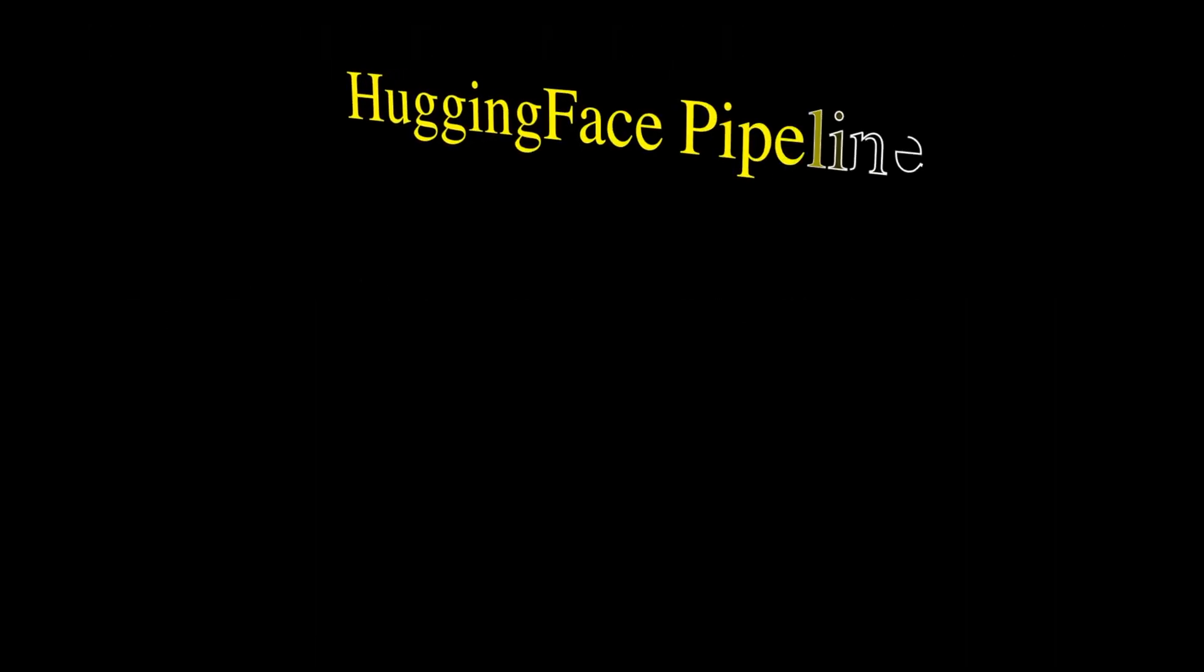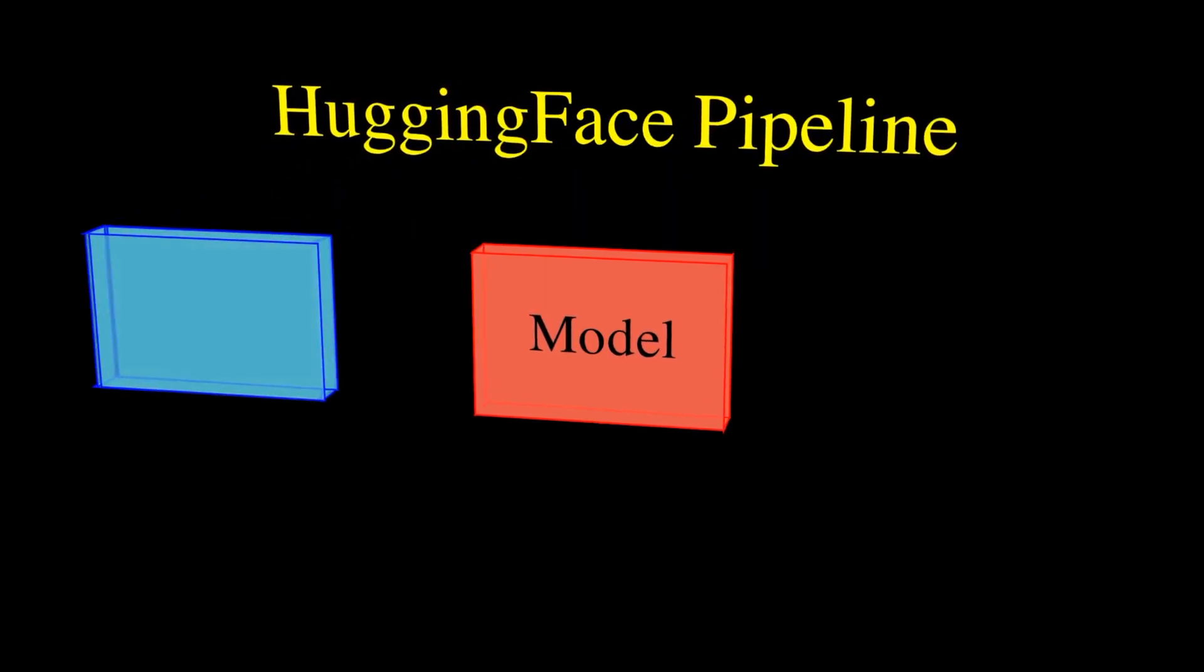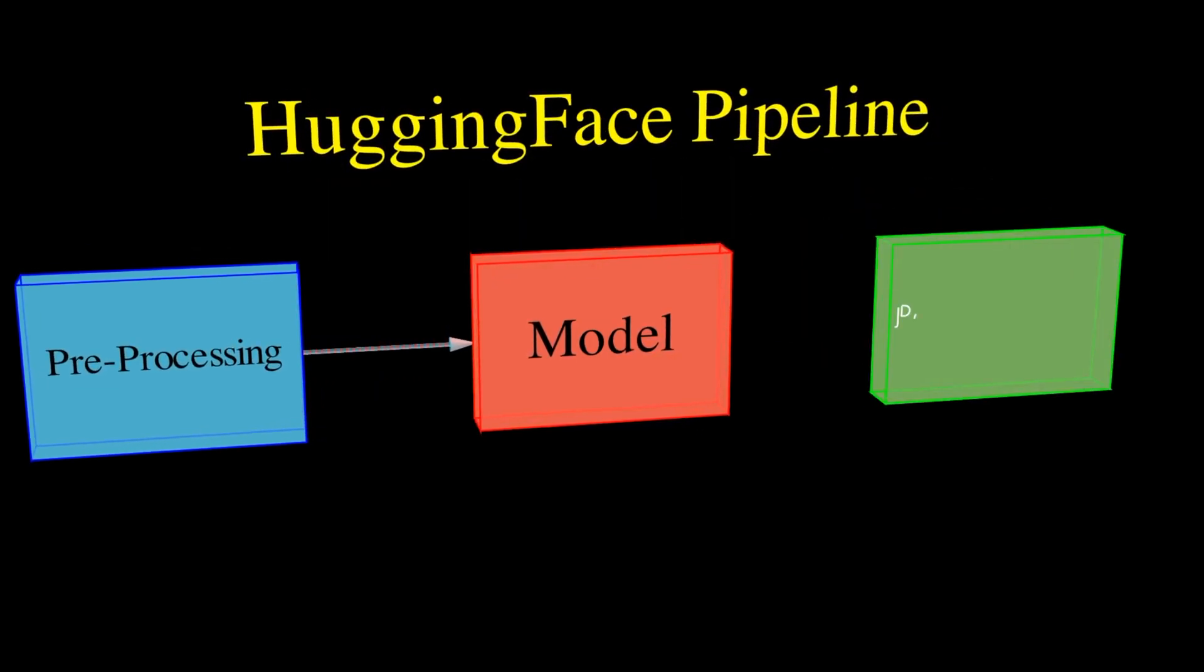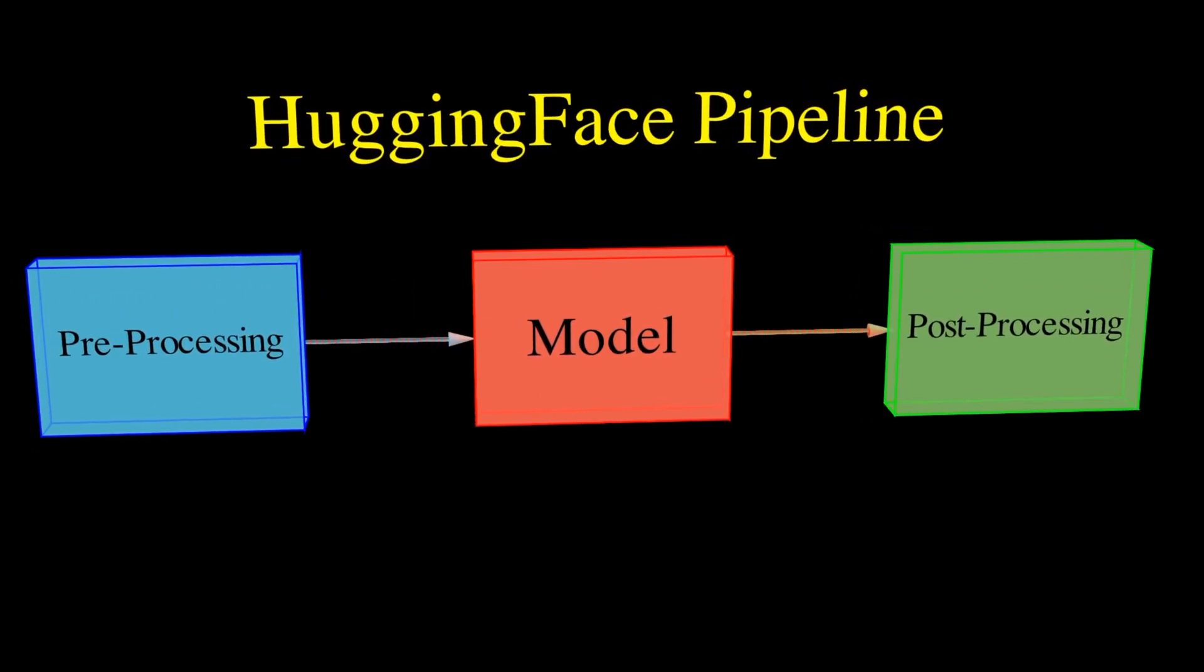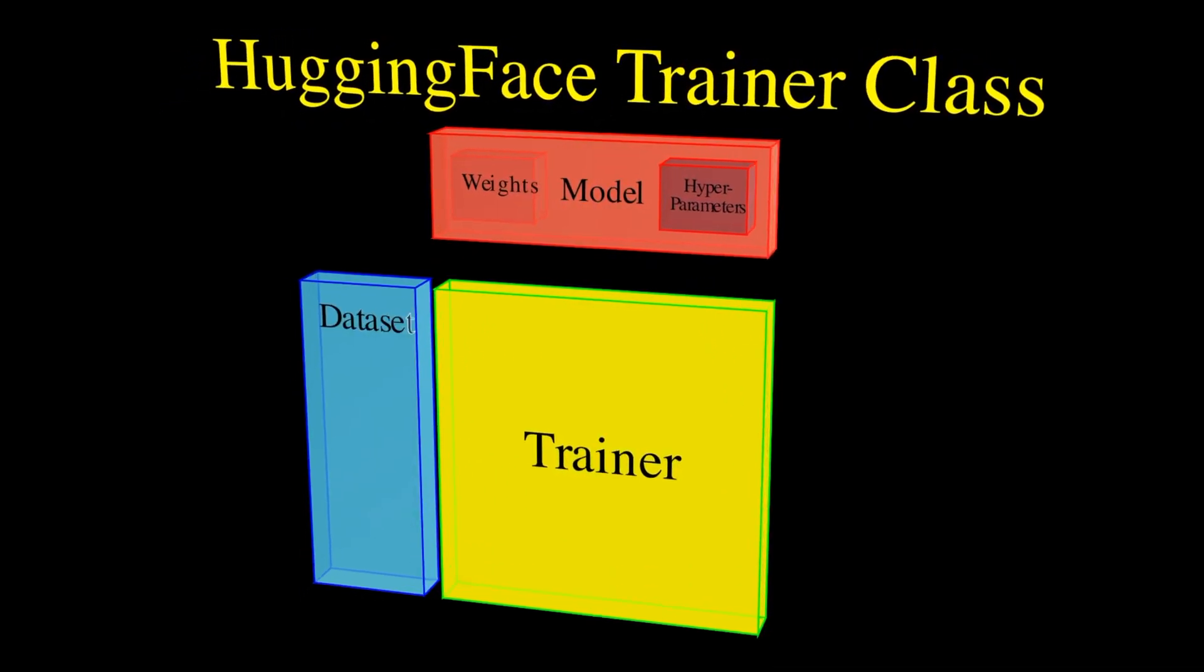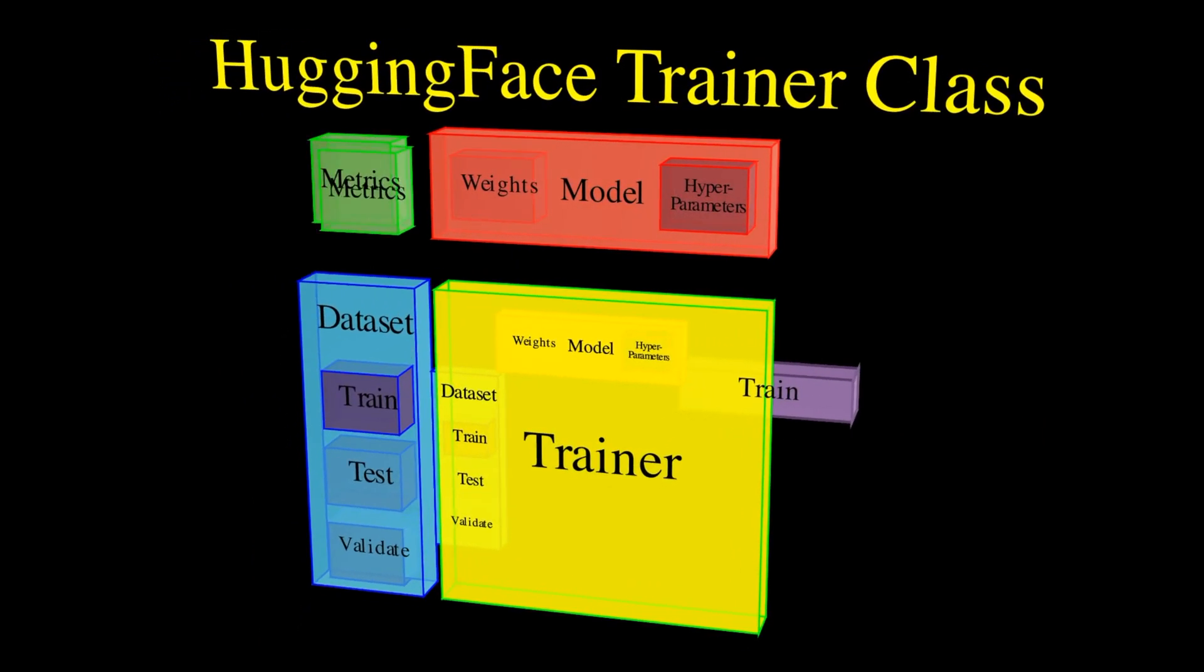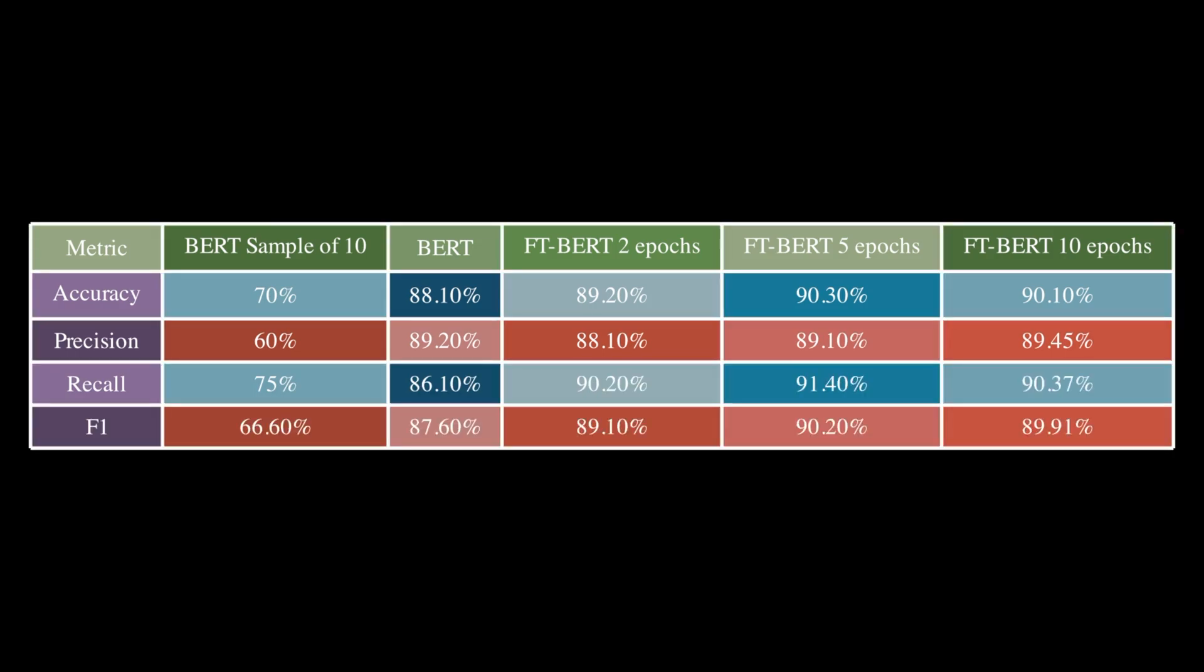So let's recap what we've covered in this video. We explored how the Hugging Face pipeline simplifies the use of large language models, taking care of the nitty-gritty pre-processing and post-processing so that you can focus on your specific task. We saw how the Hugging Face trainer acts as your model's coach, guiding it to become an expert through fine-tuning on real-world data. And most importantly, we saw the tangible impact of fine-tuning on a sentiment analysis model, significantly improving the accuracy, precision, recall and F1 score.